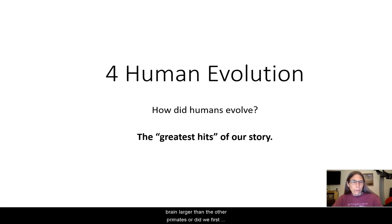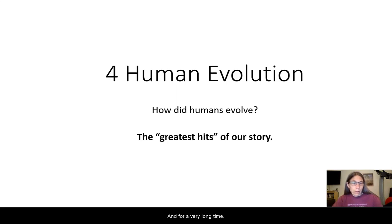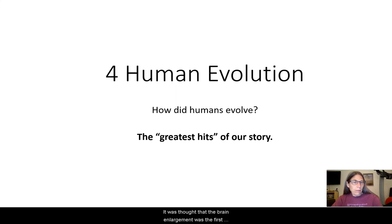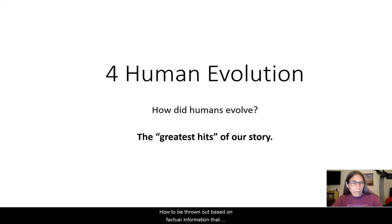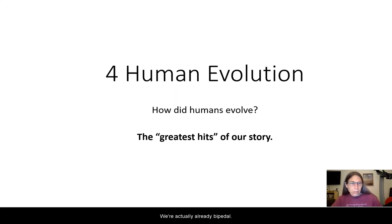Did we first evolve a larger brain, larger than the other primates? Or did we first develop the ability to walk upright, which is known as bipedalism — walking on two legs instead of four? For a very long time, until relatively recently — I graduated high school in 1975 — it was thought that brain enlargement was the first thing that happened, and was the thing that set us off on a different evolutionary path from all the other primates. But that hypothesis had to be thrown out based on factual information that was discovered, which clearly showed that the earliest human-type species, or what we call hominids, were actually already bipedal.